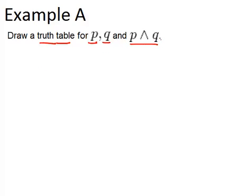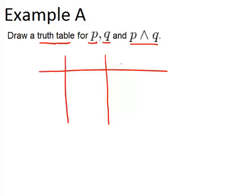Our ultimate end is going to be P and Q, and before we get there we're going to have to have P individually and Q individually. So all together you need three columns.